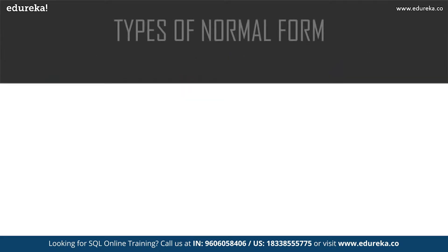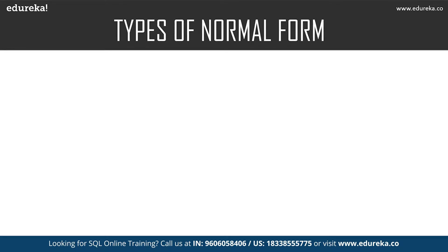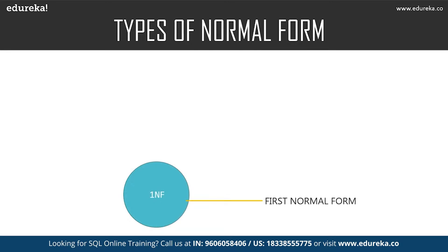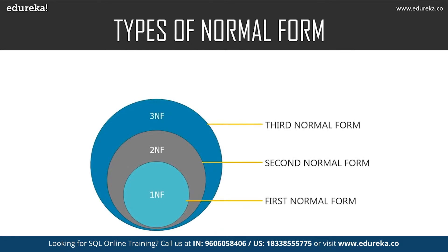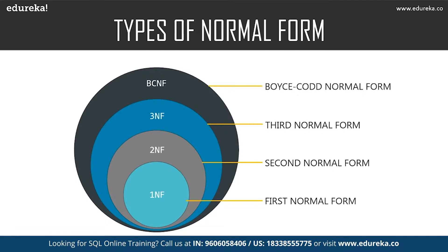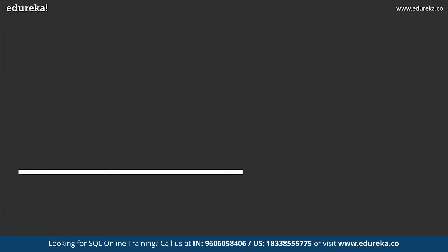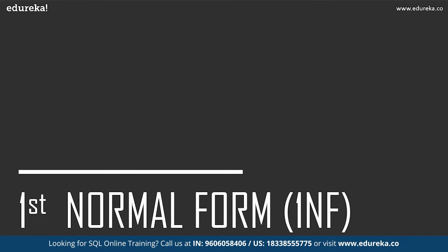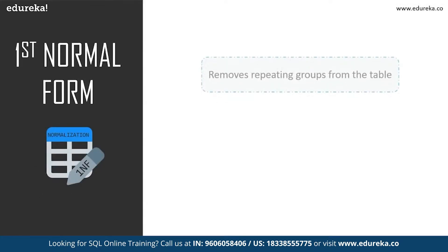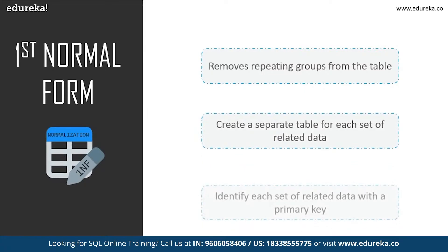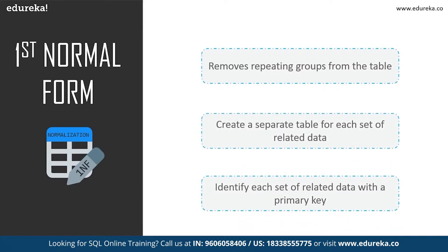To eliminate all these anomalies, normalization came into existence. There are many normal forms still under development, but let's focus on the essential ones: first normal form, second normal form, third normal form, and Boyce-Codd normal form. In first normal form, we tackle the problem of atomicity. Atomicity means values in the table should not be further divided — a single cell cannot hold multiple values.